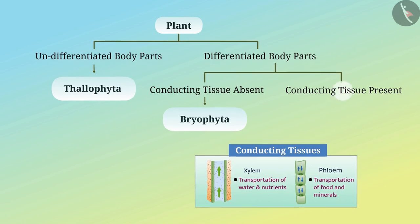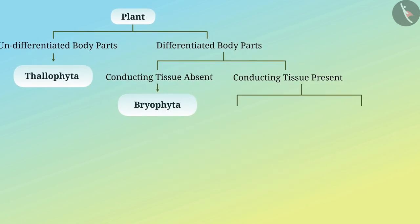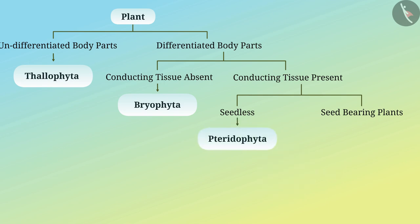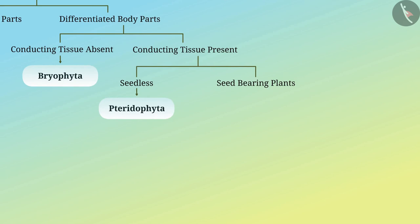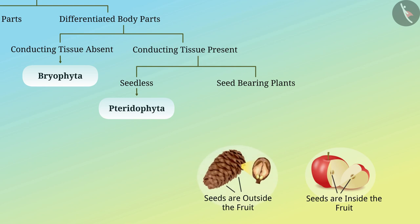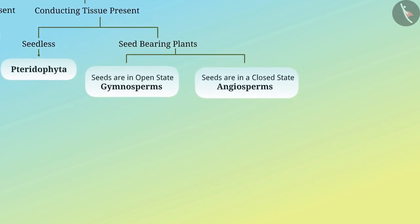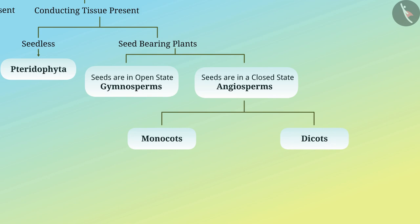Plants that have tissues for conduction are classified based on their ability to hold seeds. Seedless plants are placed in the subclass Pteridophyta. Seed-producing plants are classified based on whether the seed is inside or outside the fruit. Plants whose seeds grow outside the fruit are called gymnosperms, and those whose seeds grow inside the fruit are called angiosperms. Angiosperms can be further classified into monocots and dicots based on the number of cotyledons.